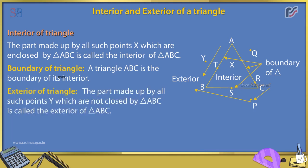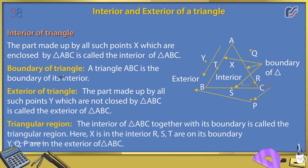The exterior of a triangle is the part made up by all such points Y which are not enclosed by triangle ABC. The triangular region is the interior of triangle ABC together with its boundary.